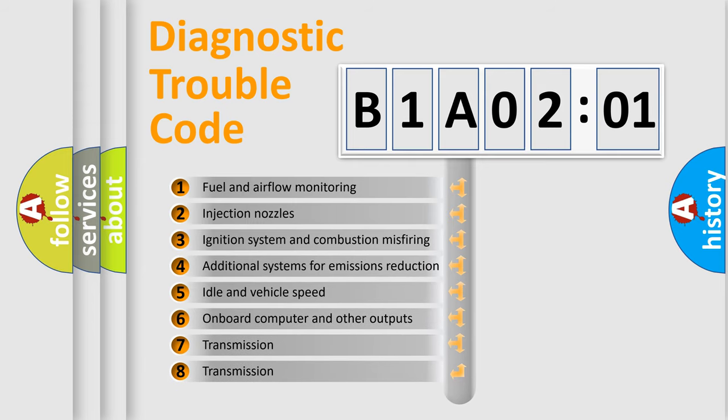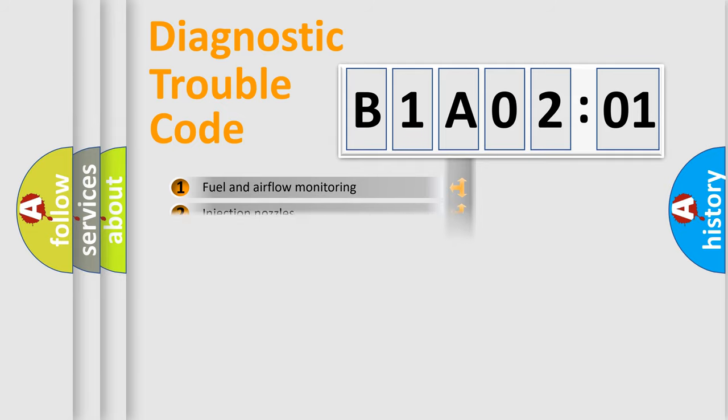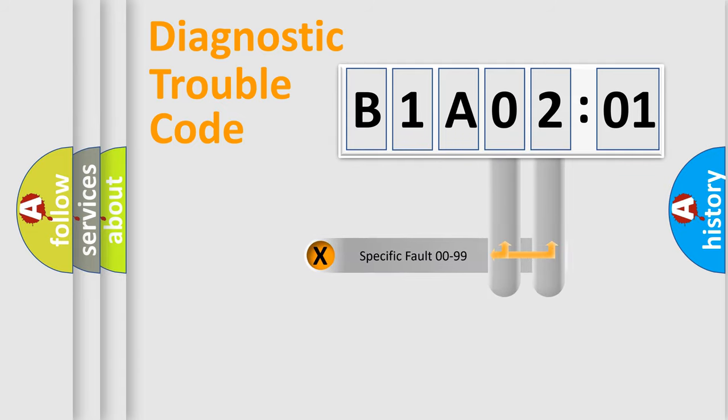The third character specifies a subset of errors. The distribution shown is valid only for the standardized DTC code. Only the last two characters define the specific fault of the group.